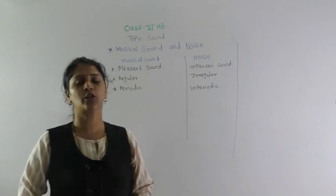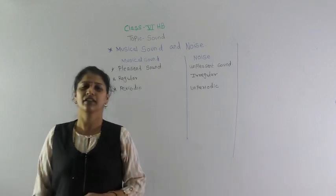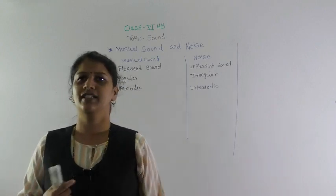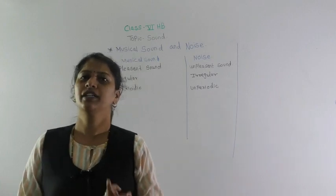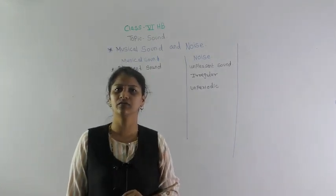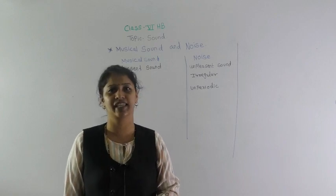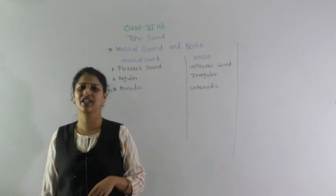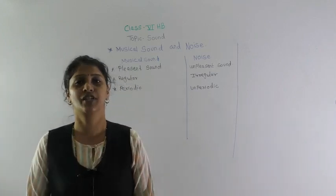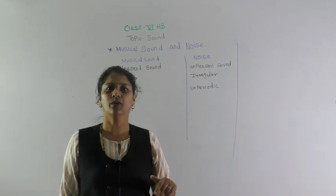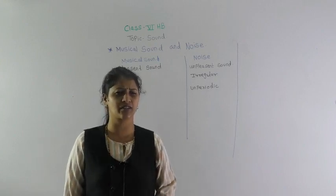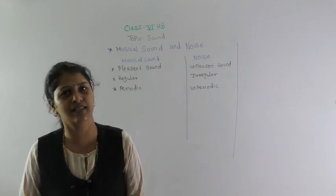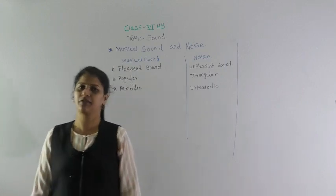We also discussed about good and bad reflectors. Can you tell me what is the interval that a human can distinguish between two sounds? It is one tenth of a second. And the minimum distance required to get an echo is 17 meters. Very good.